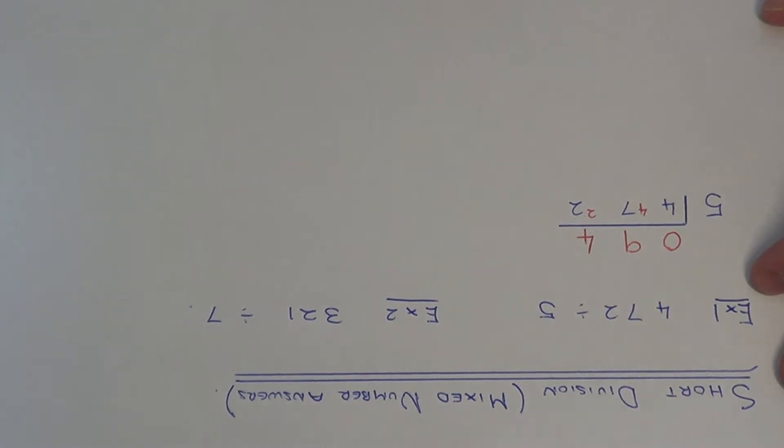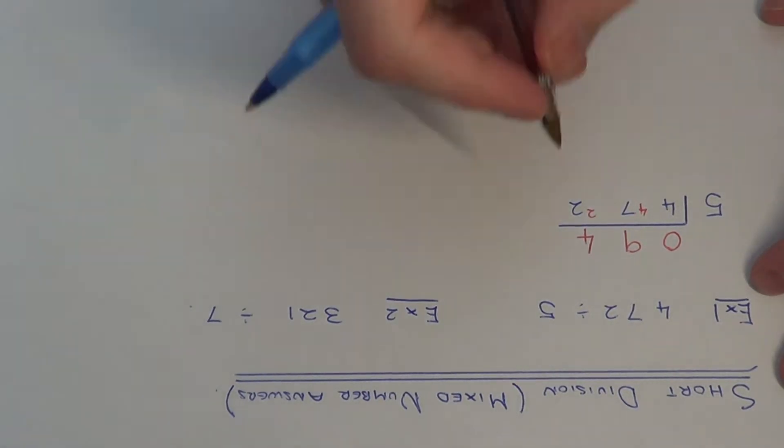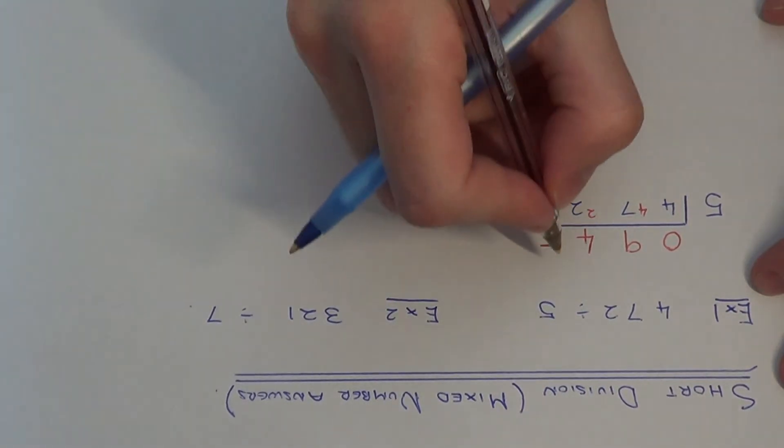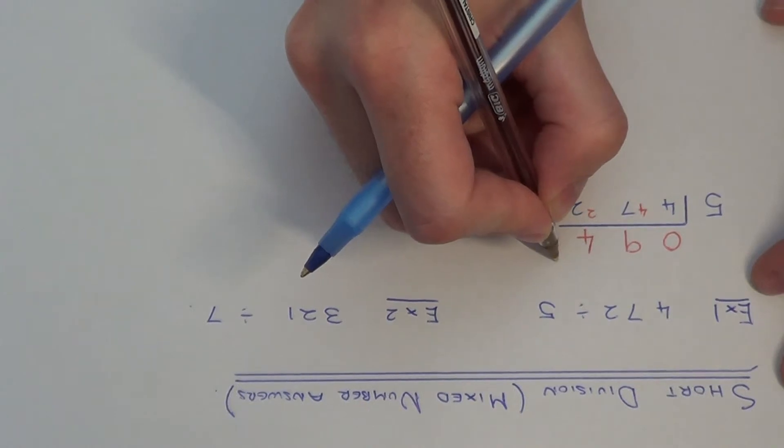Now we're going to write our answer as a mixed number, so we just need to do a fraction here. We put the remainder on the numerator, which was 2.